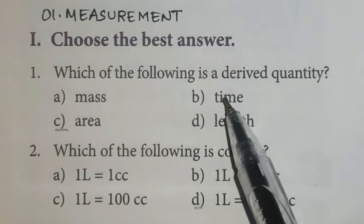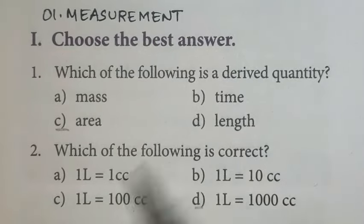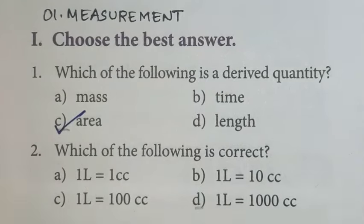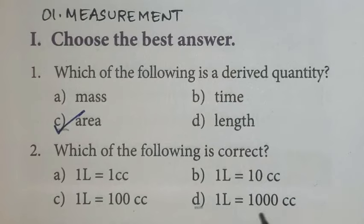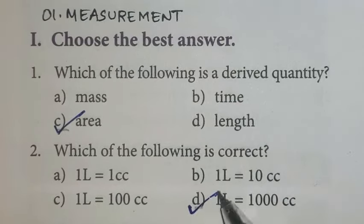First one, which of the following is a derived quantity? Area. Option C is the right answer. Second one, which of the following is correct? One liter is equal to 1000 cubic centimeter. Option D is the right answer.